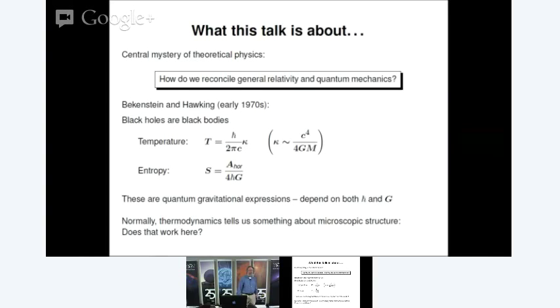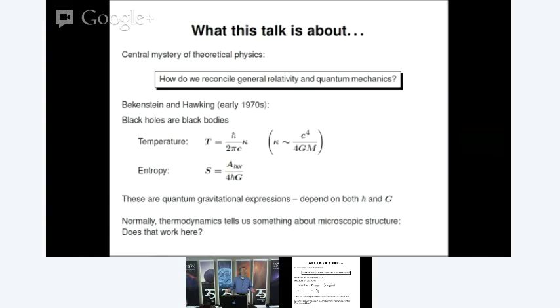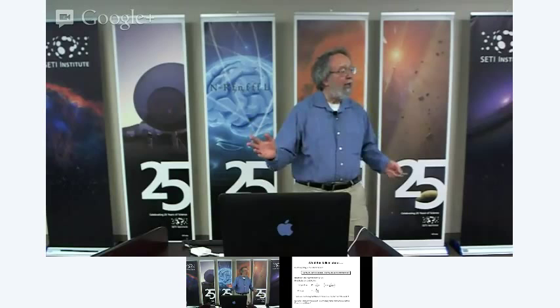In other systems, thermodynamic properties reflect the microscopic physics. When we talk about the temperature of the air in this room, we're really talking about the average energy of the molecules of air. When we talk about entropy, we're really talking about the number of microscopic configurations that look the same macroscopically. So it's natural to hope that knowing something about the thermodynamics of black holes might tell us something about the microscopic states, and therefore about the quantum theory.